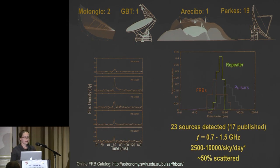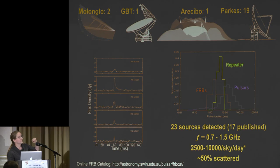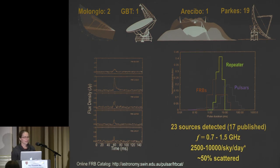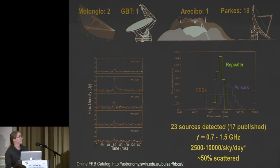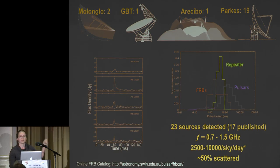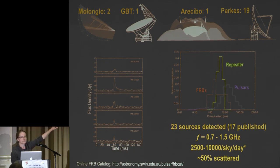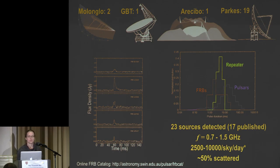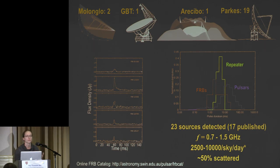Here's a general overview of what's been detected: 23 sources, 17 published, with only six unpublished bursts at the moment. Two very recently announced from a Molonglo burst at the Green Bank Telescope, one at Arecibo — which is repeating as Vicky will discuss — and a large number at the Parkes radio telescope. Light curves show variety: one is probably instrumentally dominated, another has a fast rise exponential tail, and a third is double-peaked.